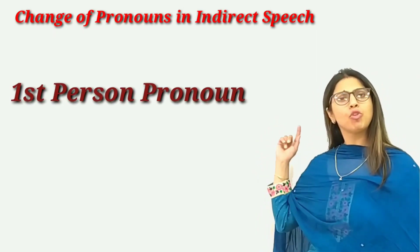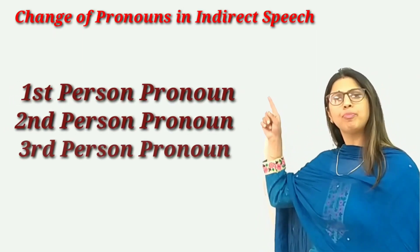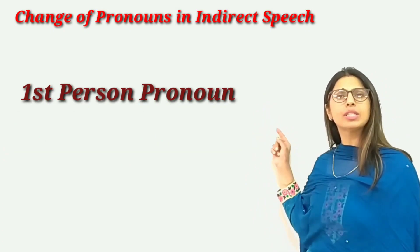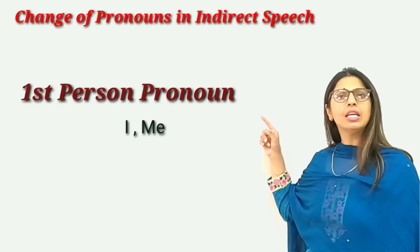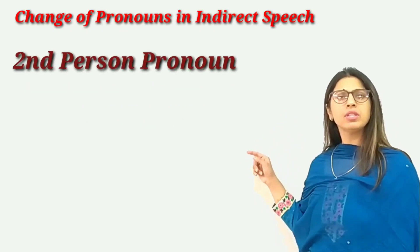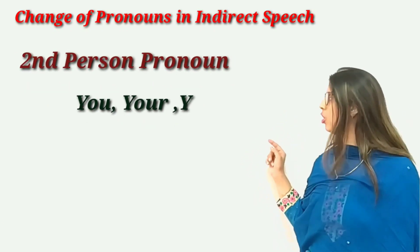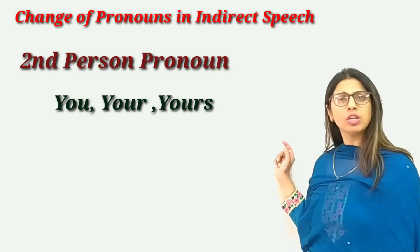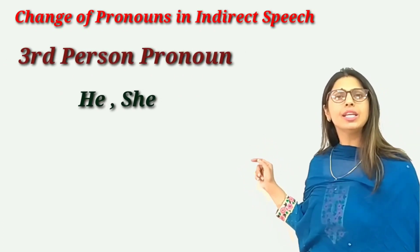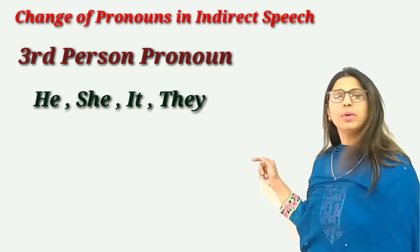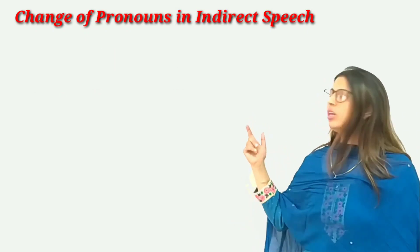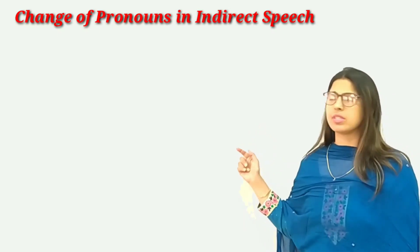As we all know, there are three types of personal pronouns. The first person includes I, me, we, etc. The second person includes you, your, yours, and so on. And the third person includes he, she, it, they, etc. Let us try to learn this concept through some examples.